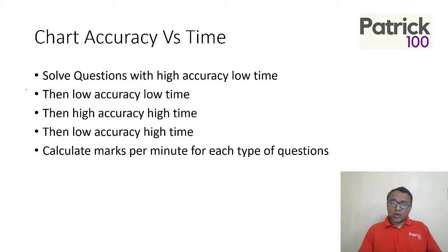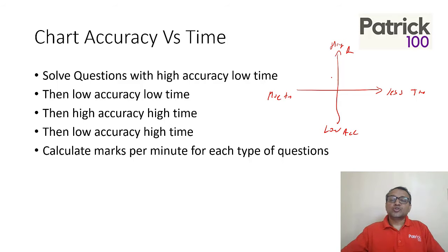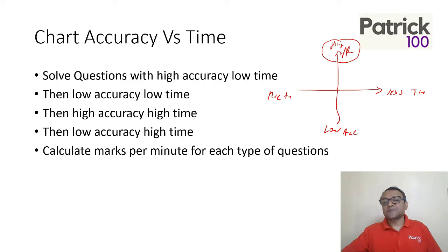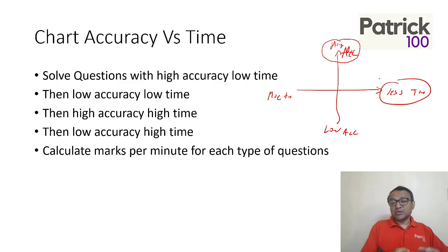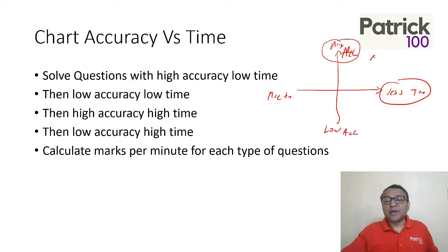First, for the two-round and three-round strategy, I normally recommend making a chart of accuracy versus time — high accuracy with less time on one end, and low accuracy with more time on the other. You would prefer questions which have high accuracy and less time. If you can take questions which take less time and give more accuracy, prefer those questions first.